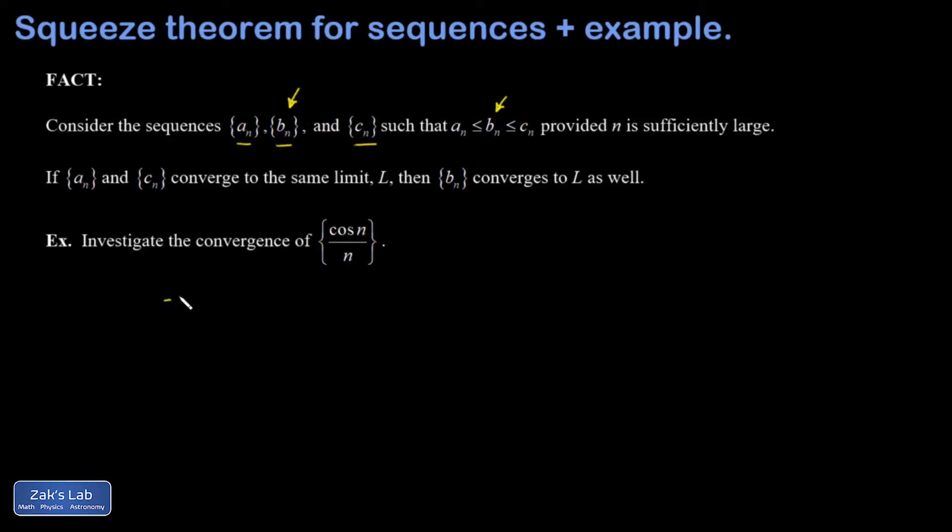I would start by saying, well, the cosine function is always bigger than or equal to negative one, but less than or equal to one. Then I could easily build this sequence by dividing by N. So I have negative one over N is less than or equal to cosine N over N, which is less than or equal to one over N.